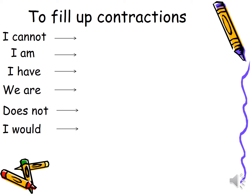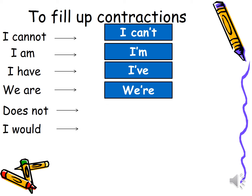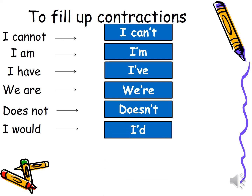How can 'I cannot' be shortened? 'I cannot go outside today because it is raining' becomes 'I can't go outside today because it's raining.' 'I am going to do some work this afternoon' becomes 'I'm going to do some work this afternoon.' 'I have my family with me' becomes 'I've got my family with me.' 'We are going to watch a film later on' becomes 'We're going to watch a film later on.' 'It does not matter' becomes 'It doesn't matter.' 'I would like to go fishing again' becomes 'I'd like to go fishing again.'